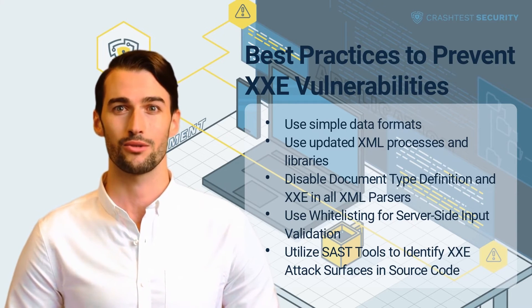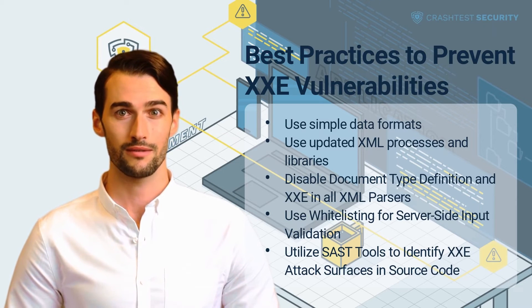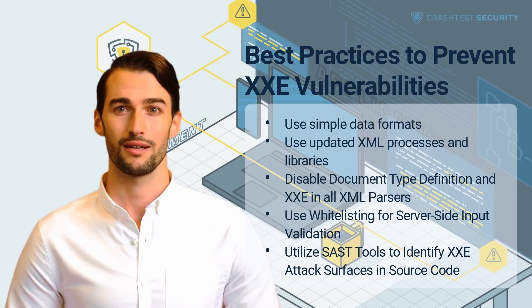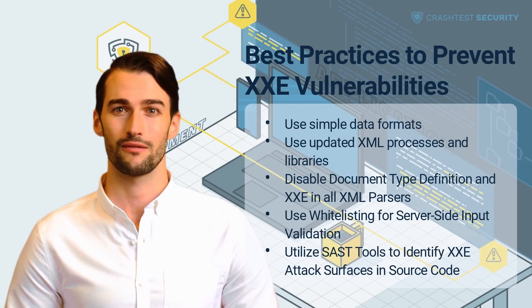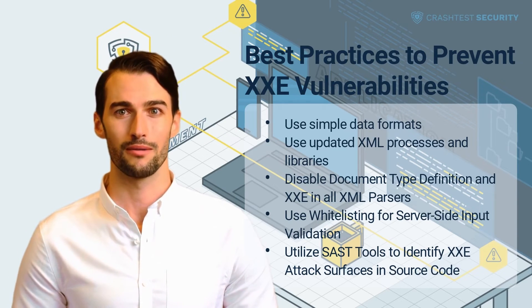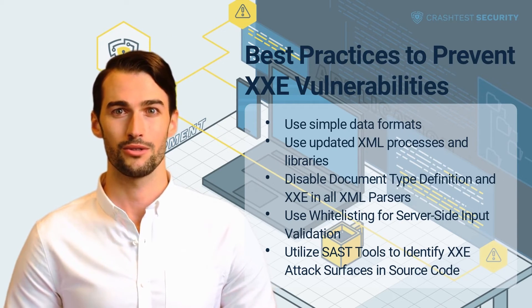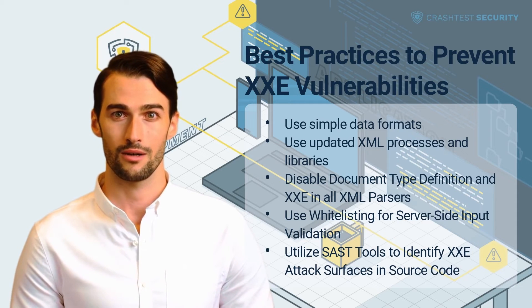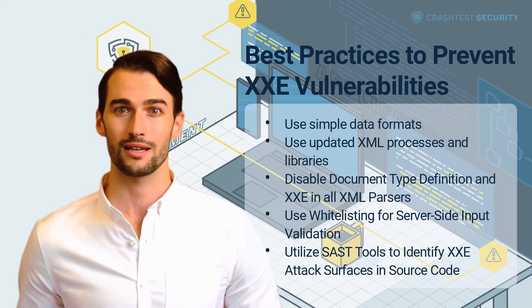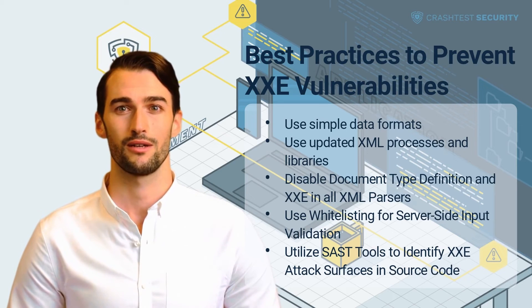Utilize SAST tools to identify XXE attack surfaces in source code. While manual code review can help teams identify potential attack surfaces, SAST tools automate the detection of vulnerabilities in source code and are considered one of the most effective ways to eliminate XXE vulnerabilities.